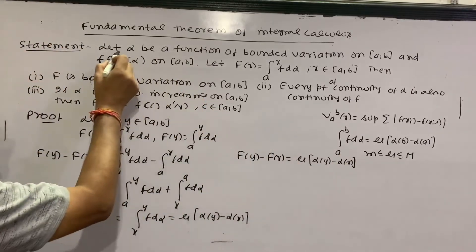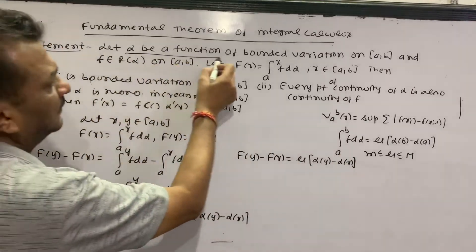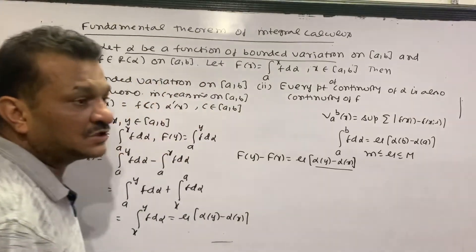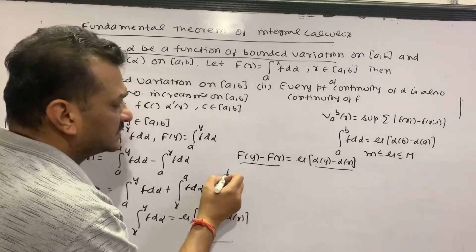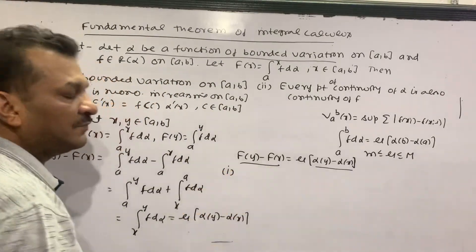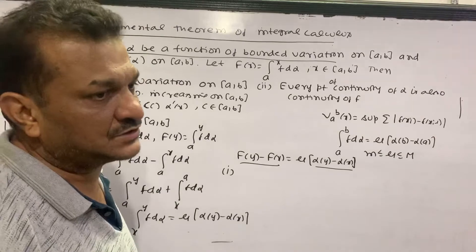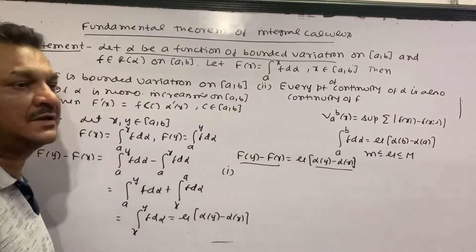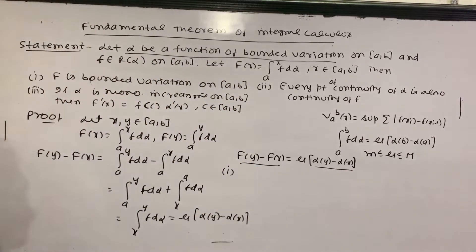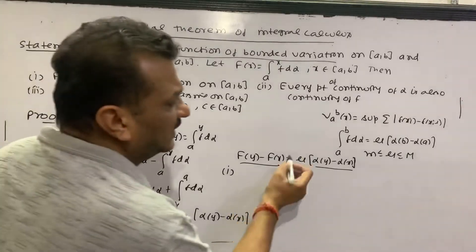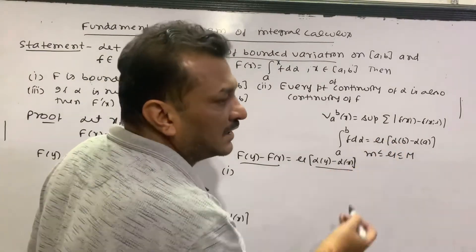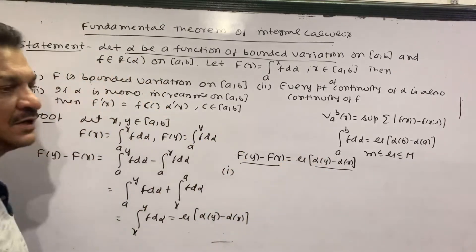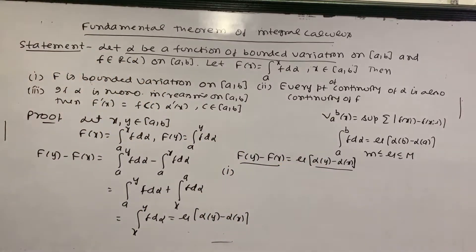Since alpha is a function of bounded variation, F is also of bounded variation. Because when we find a finite value — that is, when the variation is finite — then we conclude bounded variation for F as well. This completes the first part of the proof.